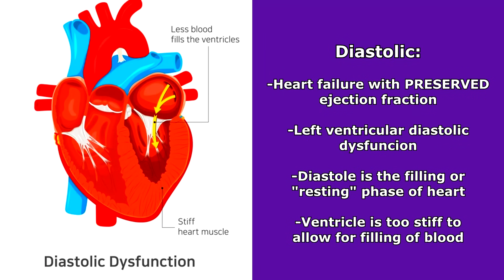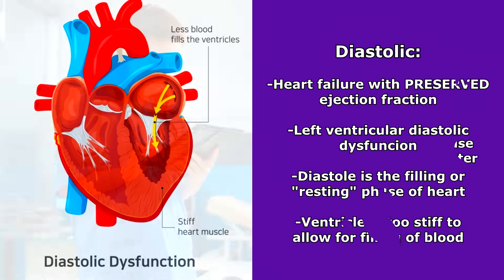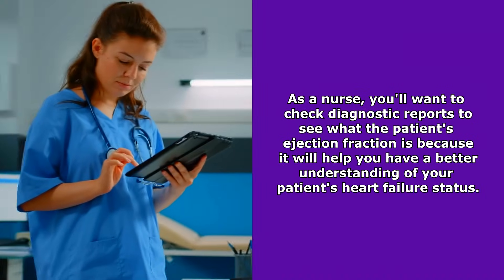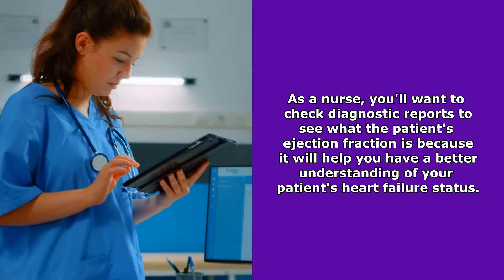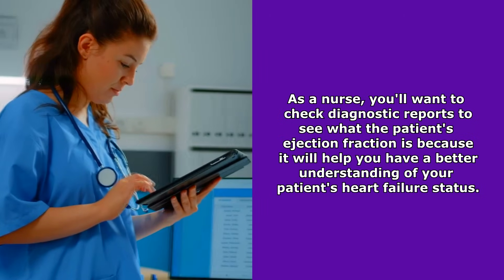Now with diastolic heart failure, this is where we have heart failure with a preserved ejection fraction, so we have left ventricular diastolic dysfunction. And with this, you want to remember that diastole is the filling or the resting phase of the heart. So in diastolic dysfunction, the ventricle is just too stiff to allow for normal filling of blood. And since there isn't an issue with contraction but the actual filling of that ventricle, the ejection fraction is actually going to be normal, hence preserved. Therefore, as a nurse, you always want to make sure you look in the diagnostic reports to see what your patient's ejection fraction is, because it'll help give you a better understanding about where your patient is in heart failure.